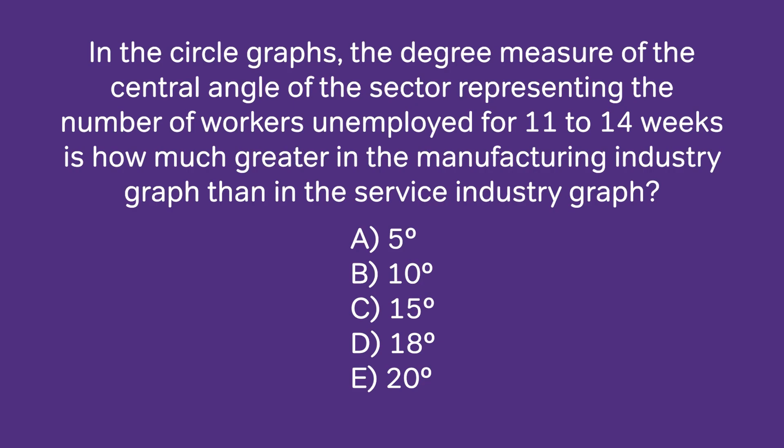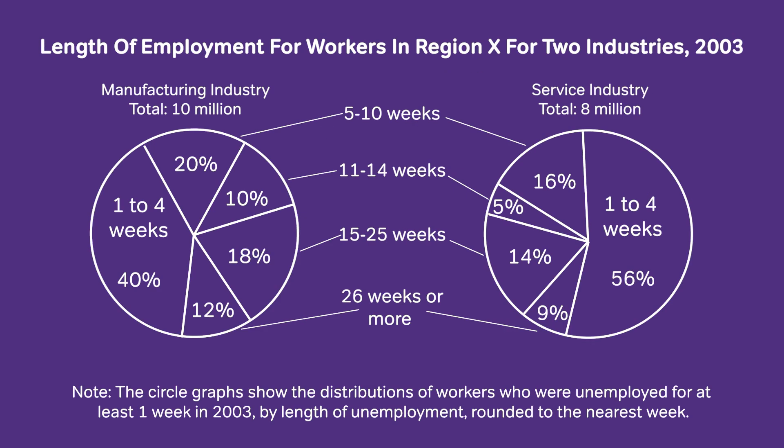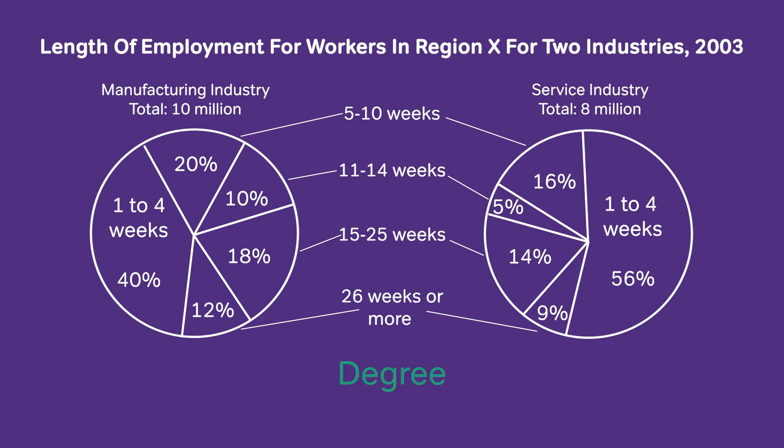In the circle graphs, the degree measure of the central angle of the sector — we're basically focused on those who are employed 11 to 14 weeks, and we're comparing it to two graphs. We're looking at the degree measure of the sector. This one is tricky because we are not looking for percent greater — we're looking for the degree of the arc. Always remember with these pie charts: you are dealing with a circle.